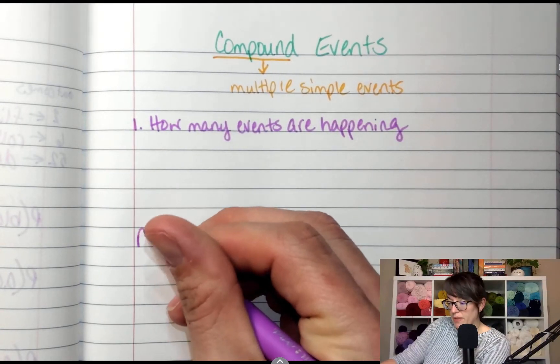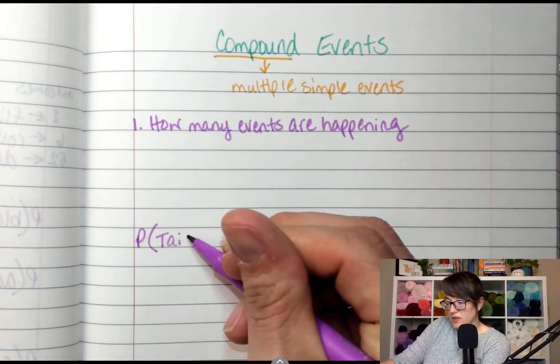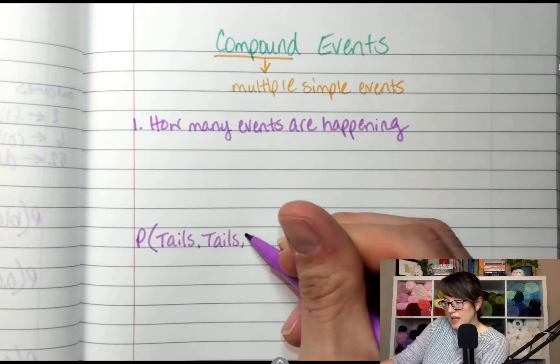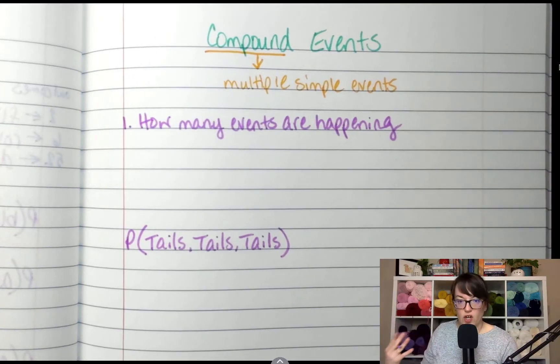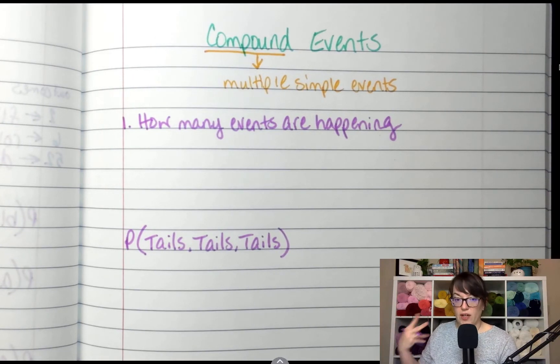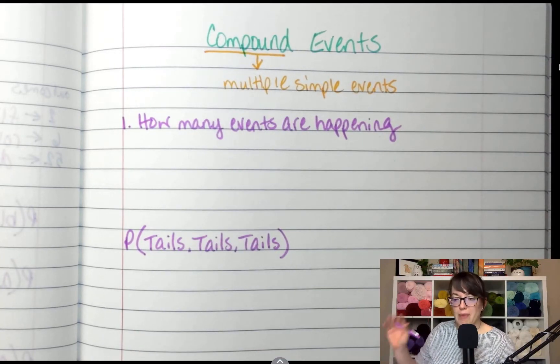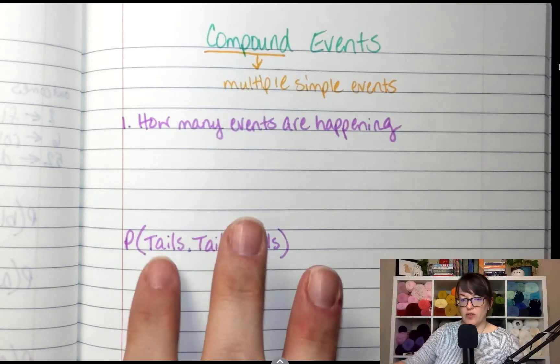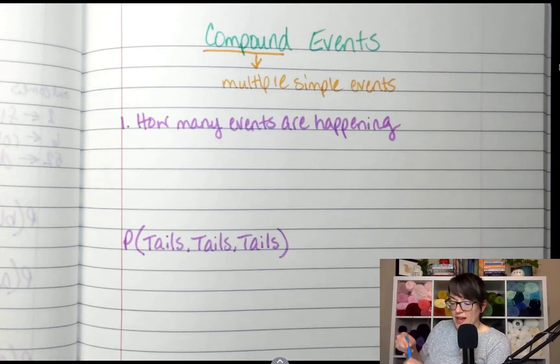Okay. The probability of landing on tails, tails, tails. So how many events are going to happen here? Three. I'm going to flip the coin three times. So this tells you how many fractions you're going to deal with. So if it's three events, that's three fractions. Now the next part, we have to calculate the probability of each event.